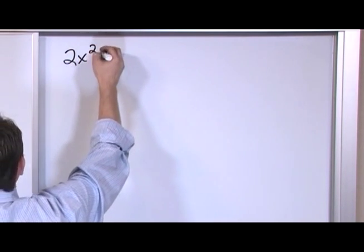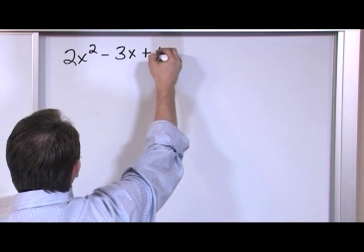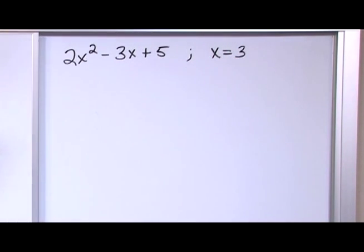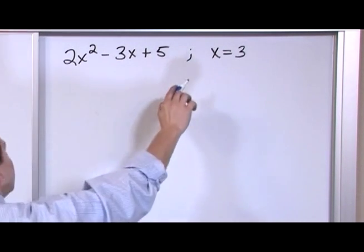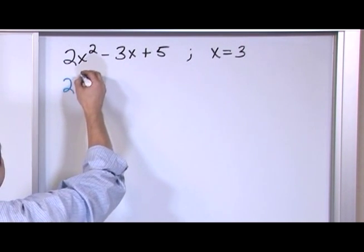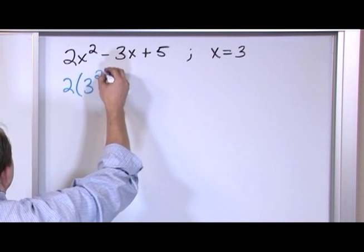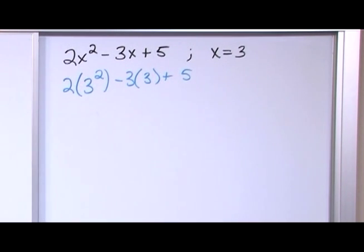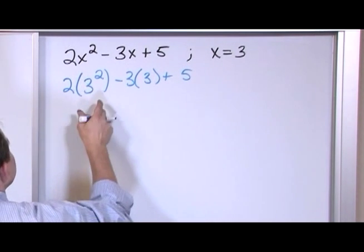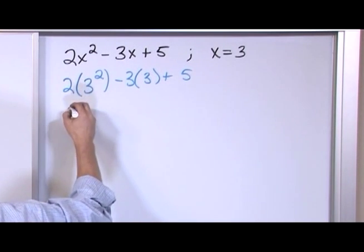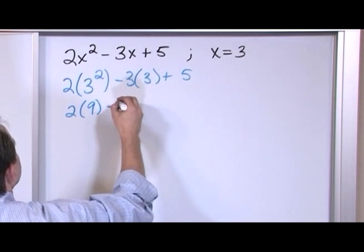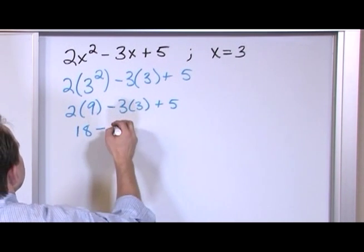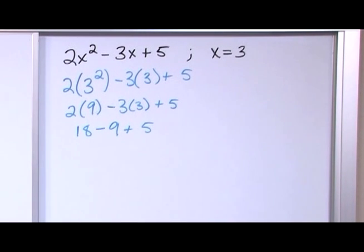What if we had 2x squared minus 3 times x plus 5, where x is equal to 3? That's a nice long expression, but it's no different — we just take x and put it everywhere we need to. So we have 2 times 3 squared, minus 3 times 3, plus 5. Take it one step at a time: the inside of the parentheses comes first. 3 squared is 9. So 2 times 9 is 18, minus 3 times 3 is 9, plus 5. Now do multiplication, then addition and subtraction left to right.